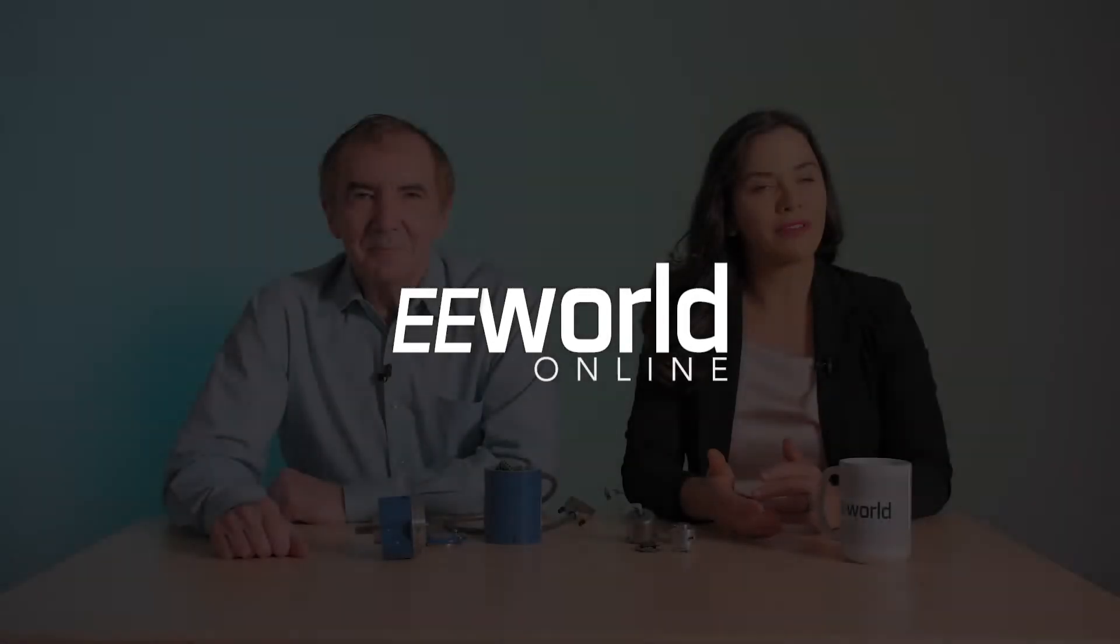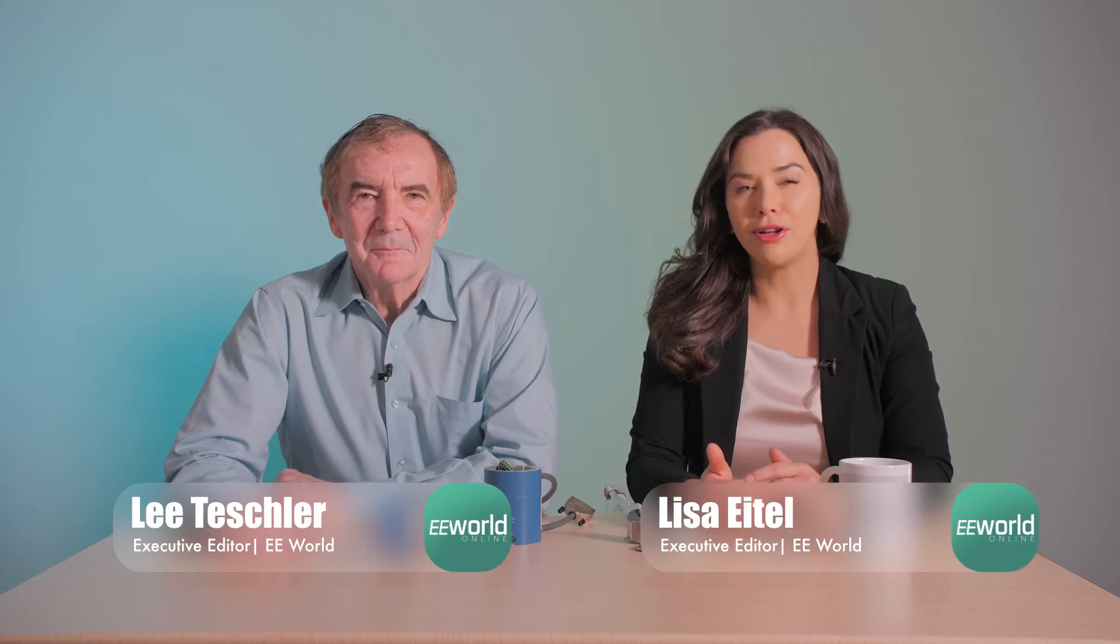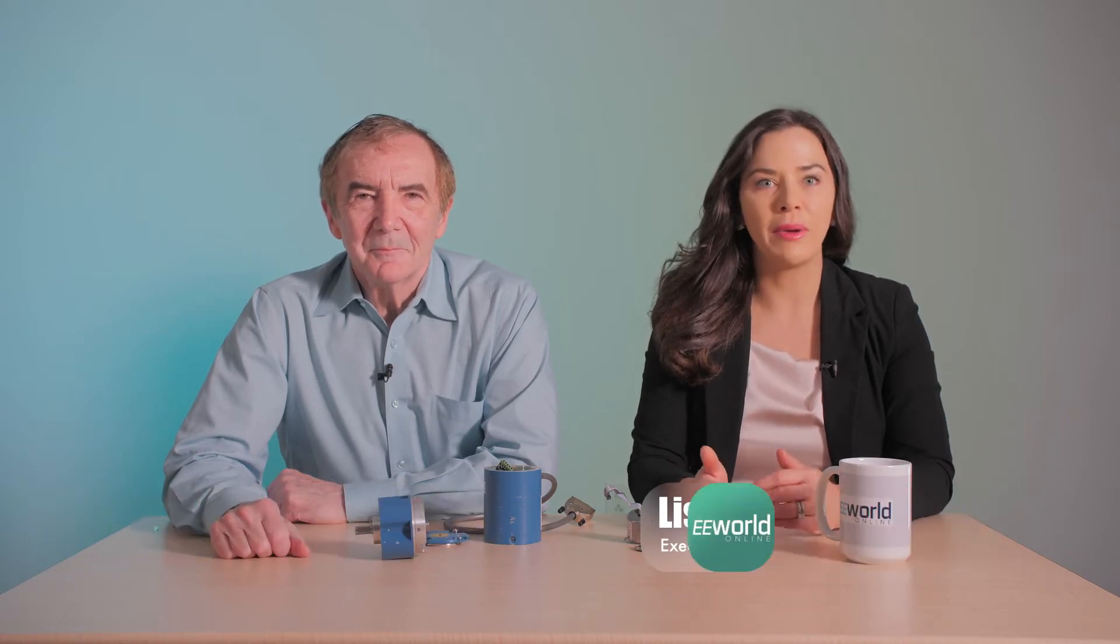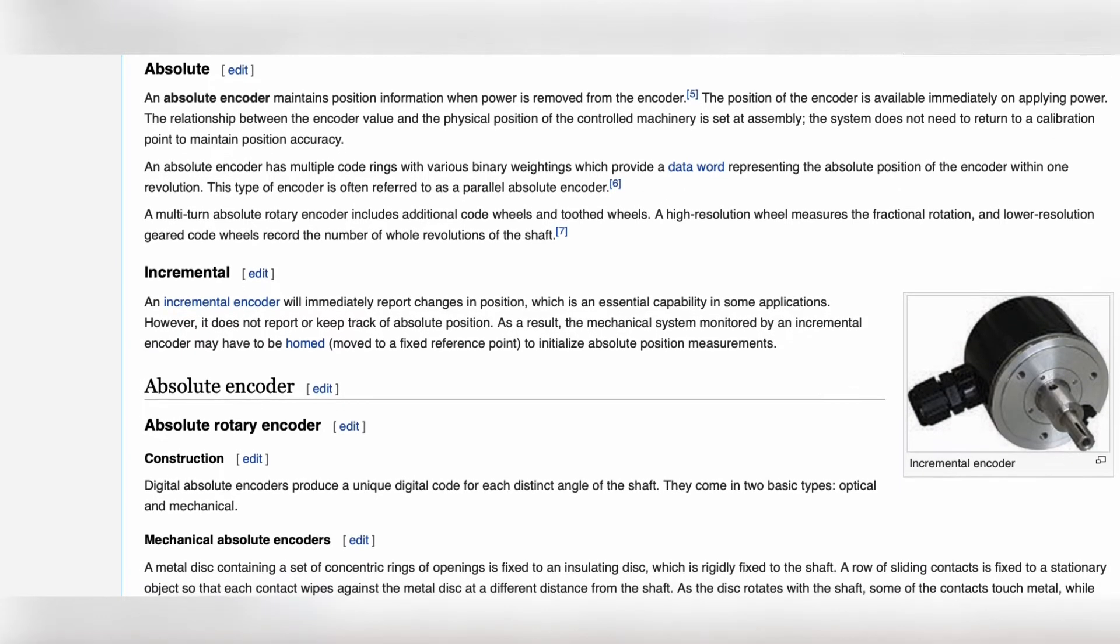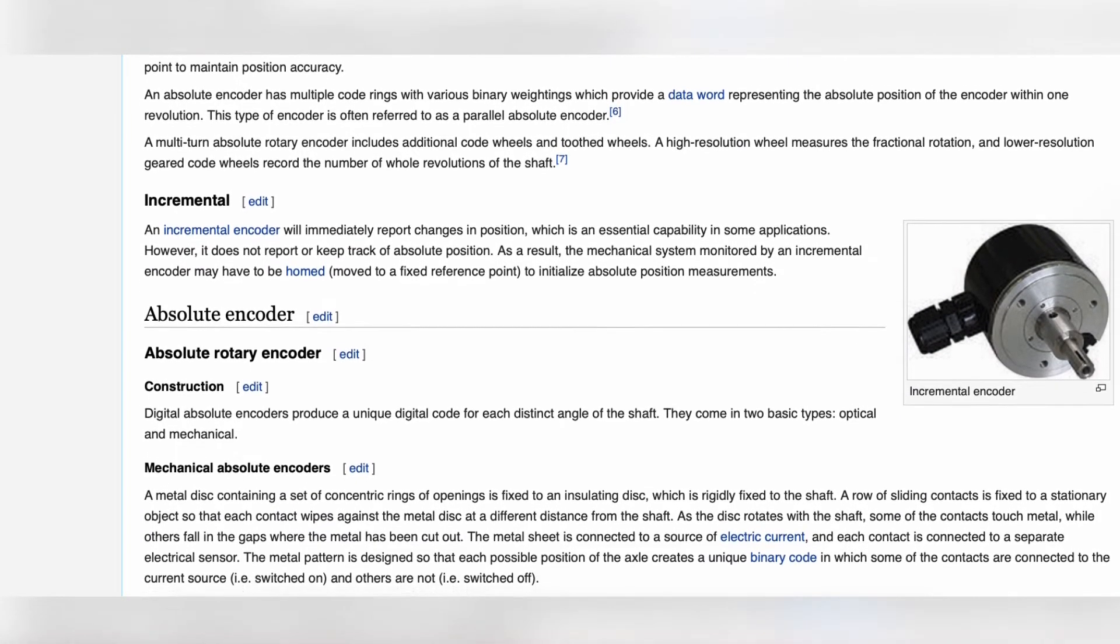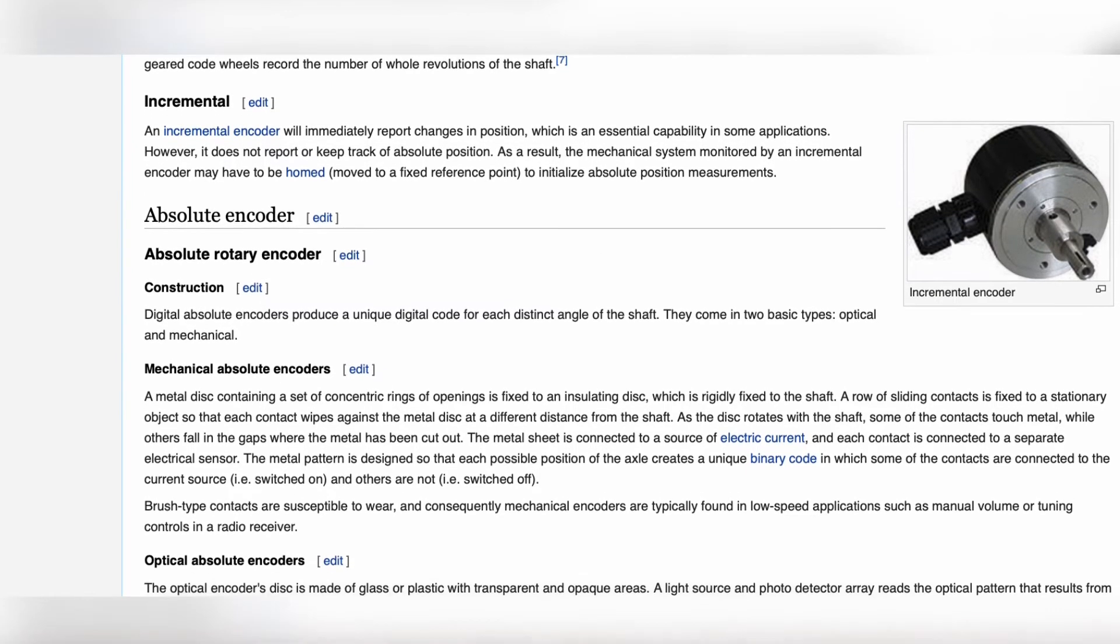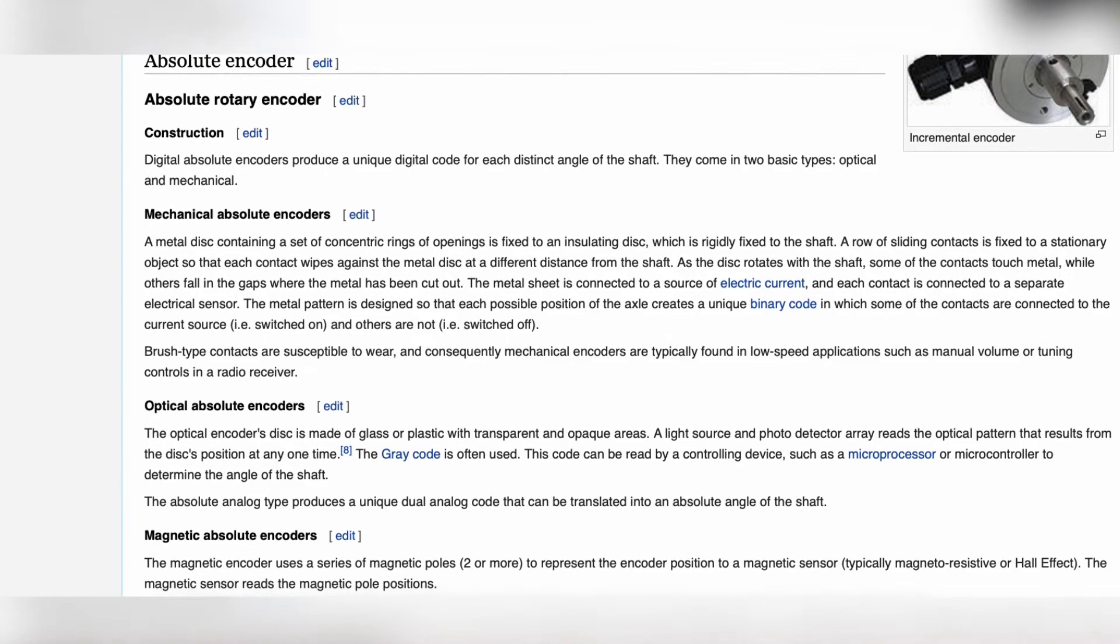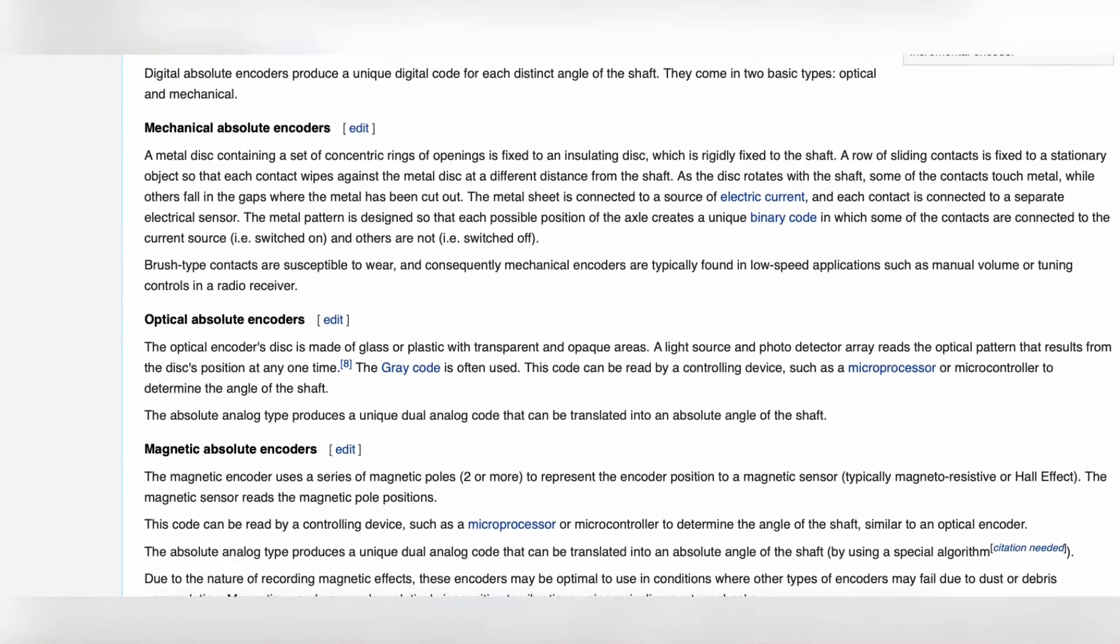If you go to the Wikipedia page on absolute encoders, you'll find descriptions of these devices mentioning multiple code rings or glass or plastic discs with transparent and opaque areas that generate optical patterns, or even configurations of sliding contacts arranged so each contact wipes against a metal disc at a different distance from a turning shaft.